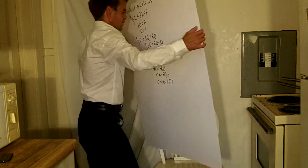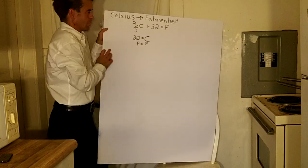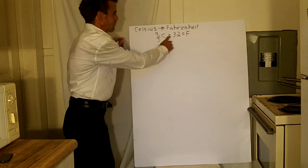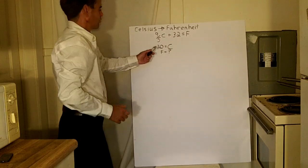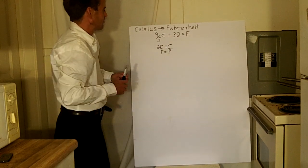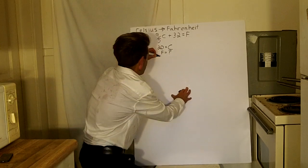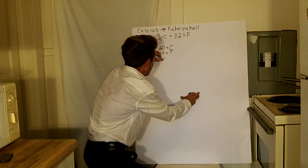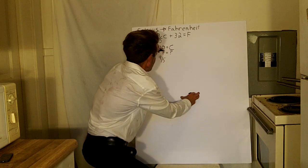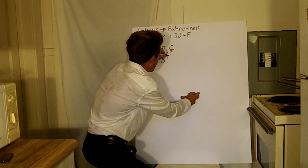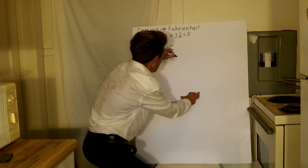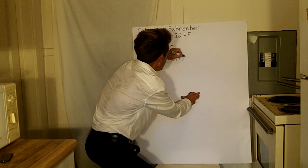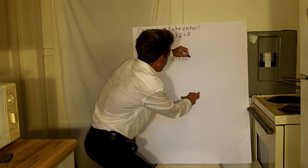Now on the opposite side, if you're going from Celsius over to Fahrenheit, it's the same formula: 9 fifths of C plus 32 equals F. So what would 20 degrees Celsius be in Fahrenheit? We'll fill it out — this time we know what C is, so it's 20. So: 9 fifths of 20, plus 32 equals F.